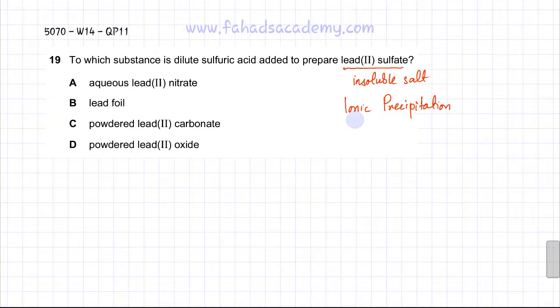In ionic precipitation, we need to make lead sulfate, PbSO4, which is insoluble. It's a solid, and the way to make it is to find two reactants which are soluble.